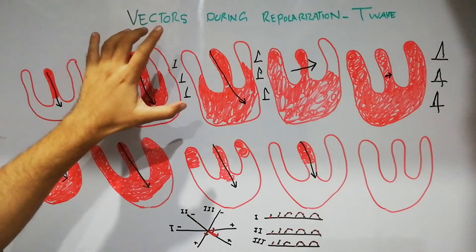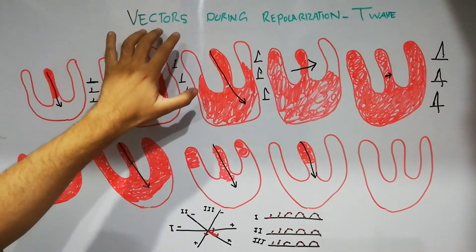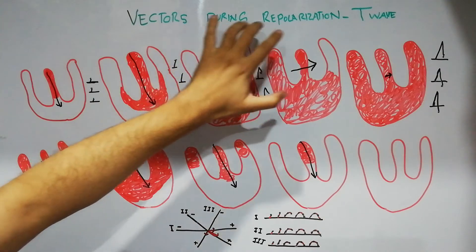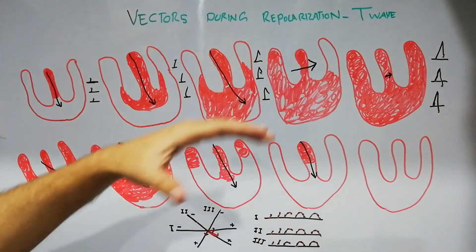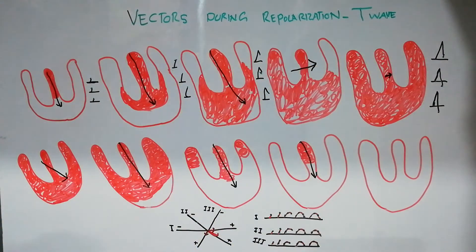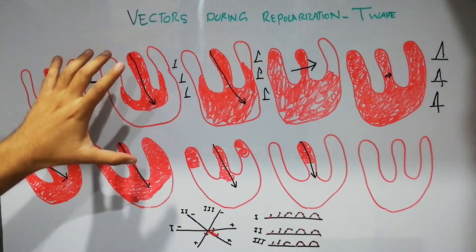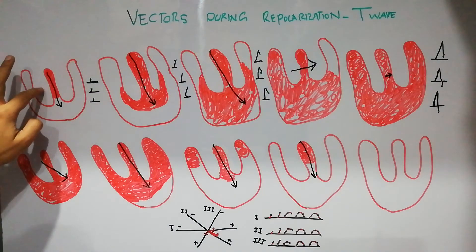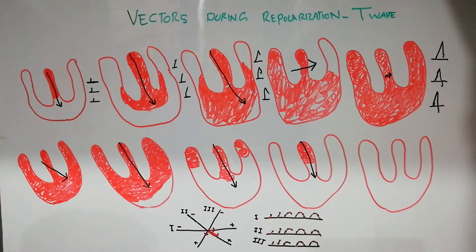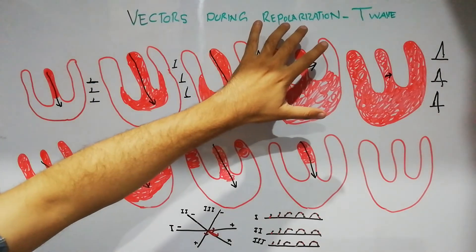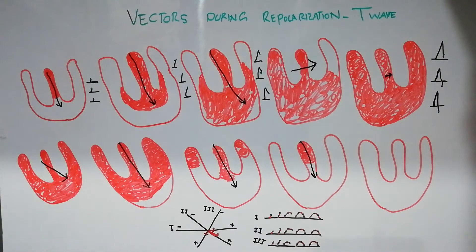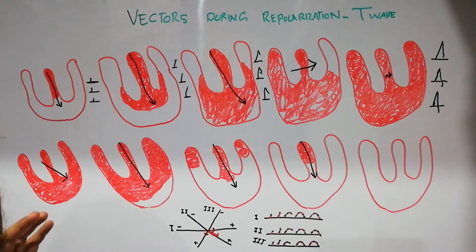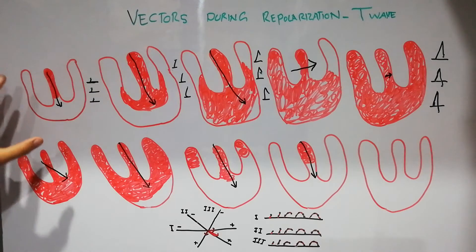Today we are going to discuss the vectors during the repolarization process, or the formation of the T wave. So far we have done the vectorial analysis for depolarization of the ventricles in detail. Now we are going to see the repolarization and how the T wave is formed in different leads. This is going to be a very simple and easy topic.